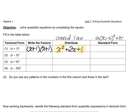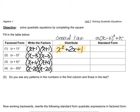We'll hold off on the standard form for a second and just work through the remainder of the table. So we have x minus 3 times x minus 3, x plus 4 times x plus 4, x minus 20 times x minus 20. When we distribute, we're going to get x squared minus 6x plus 9, x squared plus 8x plus 16, x squared minus 40x plus 400.